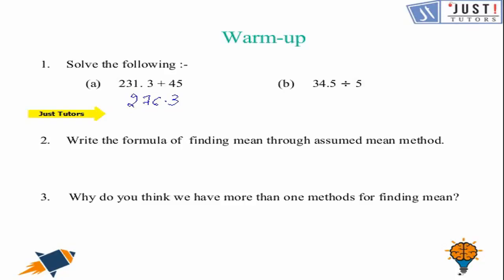Let's go to part B that says 34.5 divided by 5. The answer would be 6.9.